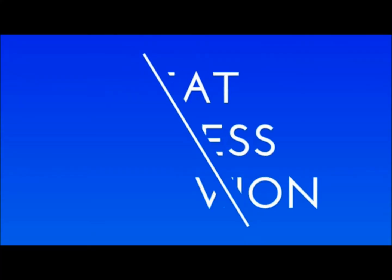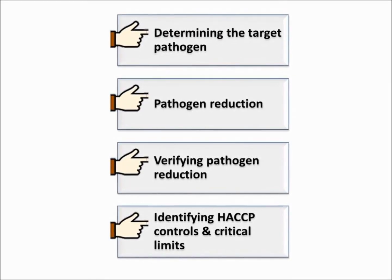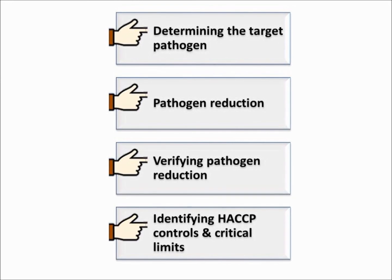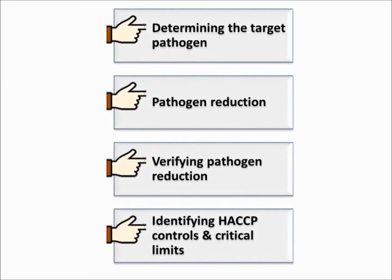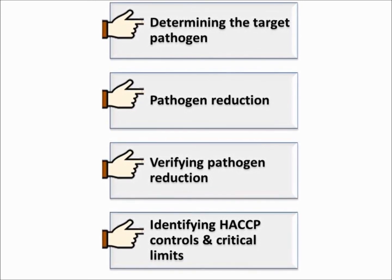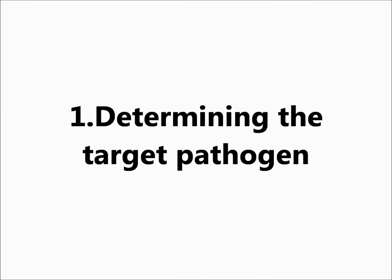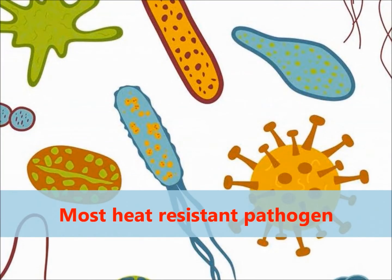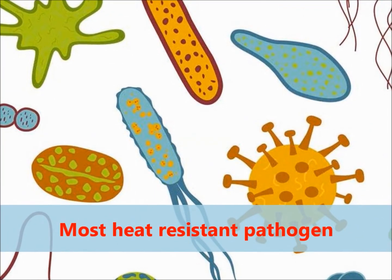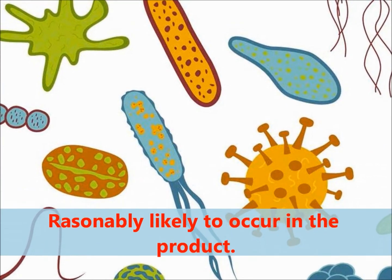For an example, let us look at the basic steps of heat process validation. Step 1: Determining the target pathogen. Step 2: Pathogen reduction. Step 3: Verifying pathogen reduction. Step 4: Identifying HACCP controls and critical limits. The target pathogen is the most heat-resistant pathogen of public health significance that is reasonably likely to occur in the product.